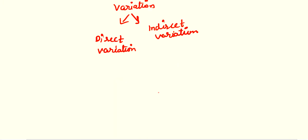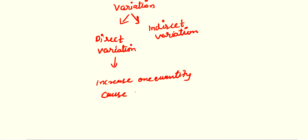So what is direct variation? Direct variation means increase in one quantity causes increase in another quantity. That means if one quantity is increasing, the other quantity also increases.